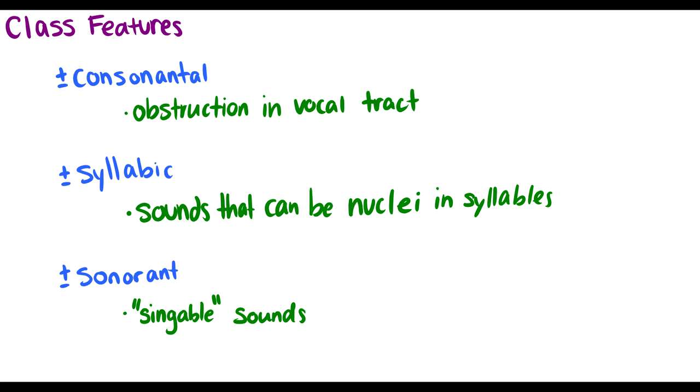The syllabic feature, basically, if it can be a nucleus, then it's going to be plus syllabic. If it's not a nucleus, it's going to be minus syllabic. So for instance, p, t, k, shh cannot be nucleuses, so they're going to be minus syllabic. But vowels and glides, well, they can be nuclei, so they'll be plus syllabic.